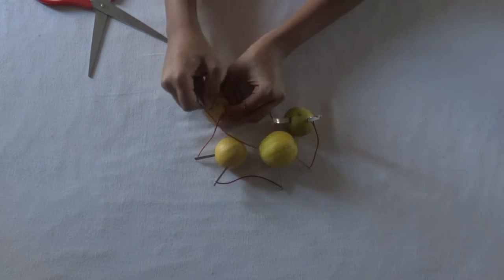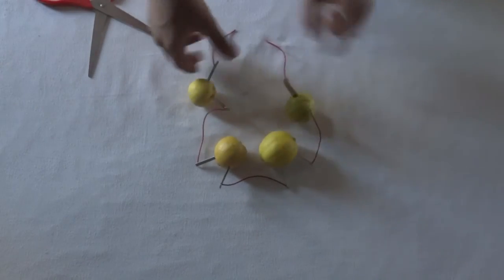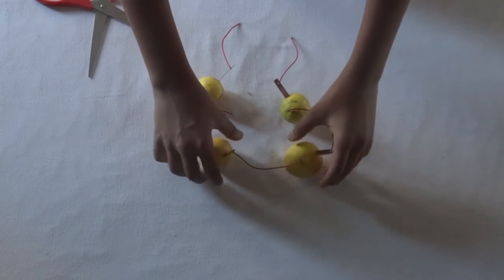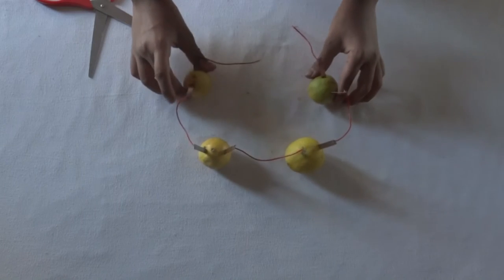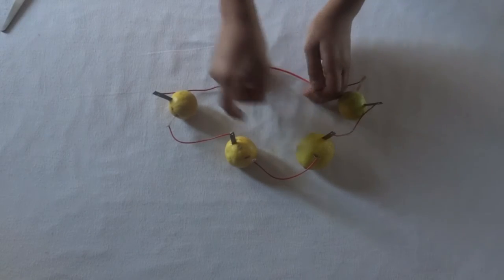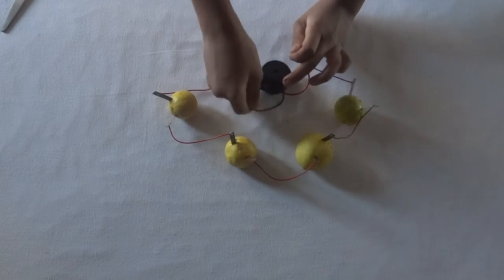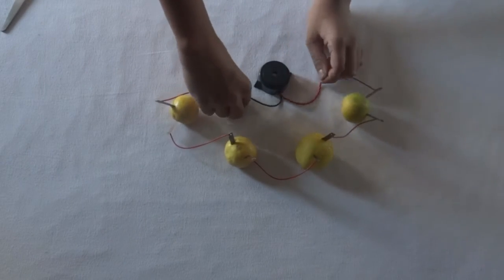You can check the voltage which is coming out from all of them with the multimeter at the two ends, that is the anode and the cathode. Now, we will connect the buzzer and see whether it has enough electricity. Wow! And as you can see, the buzzer is buzzing.